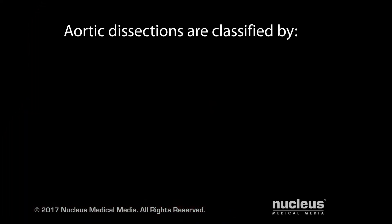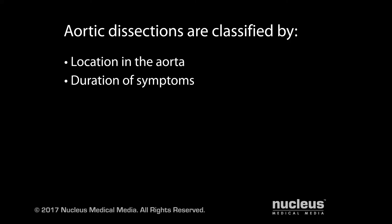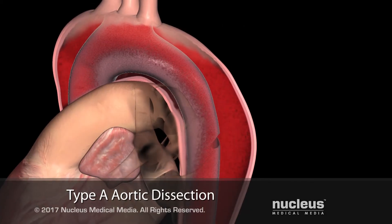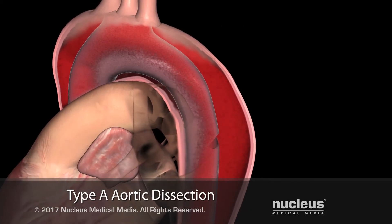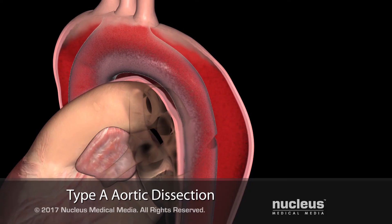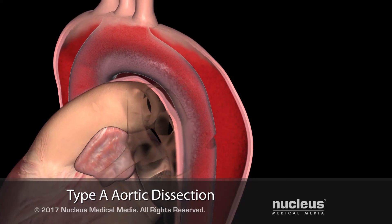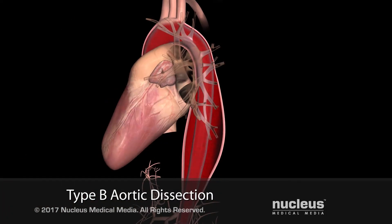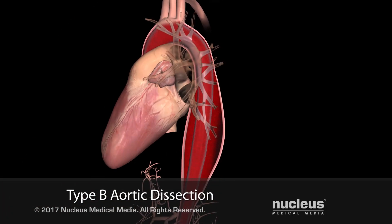An aortic dissection may be classified according to its location and duration of symptoms. In the Stanford system, if you have an aortic dissection in your ascending aorta, it is called a type A dissection. All other dissections are called type B.